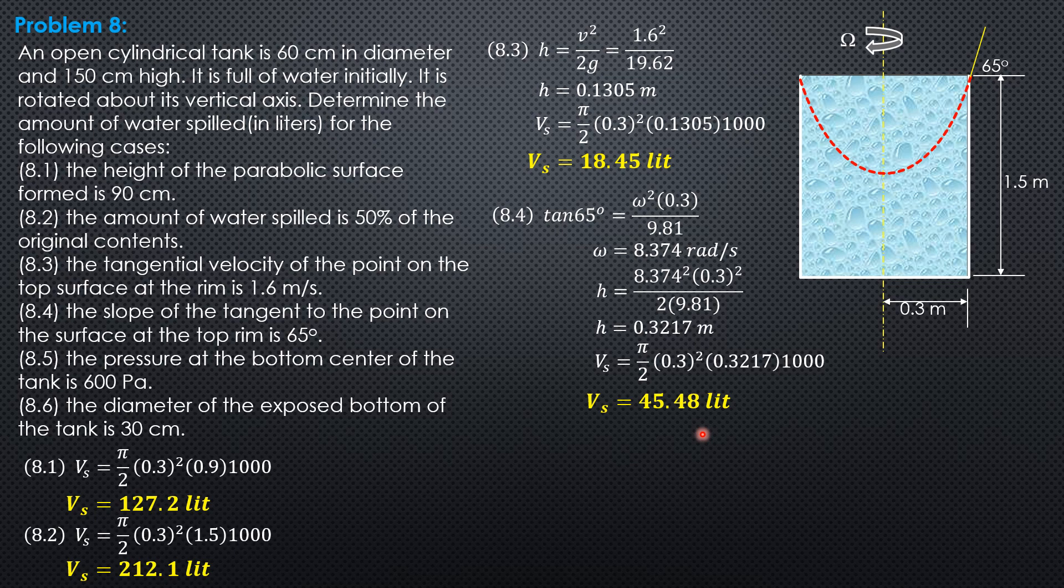Next question, the pressure at the bottom center of the tank is 600 pascals. So that means the vortex is still above that center bottom, bottom center. And we will call that HBC. So the pressure at the bottom is 600 pascals or 0.6 kilopascals equated to specific weight of water, 9.81 times HBC to solve for HBC. Then HBC is equal to 0.06116 meter.